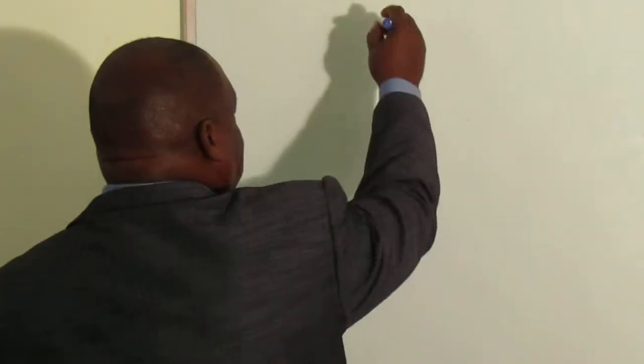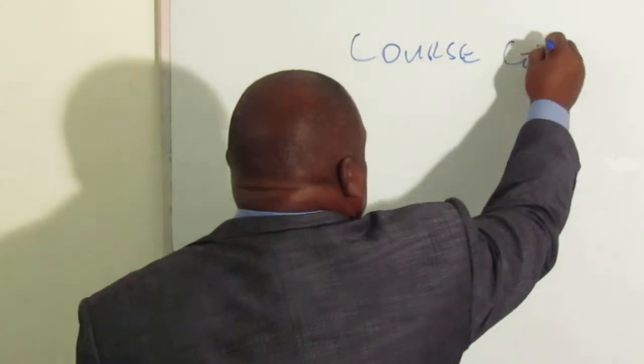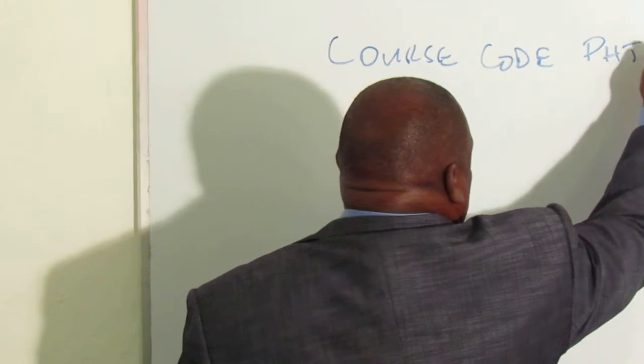Welcome to Trinity University. My name is Daniel Peary. I'll be taking you into the course entitled Introduction to Political Education and Public Administration. This falls under the School of Health Sciences, under the Program of Public Health. The course code is PHT114.